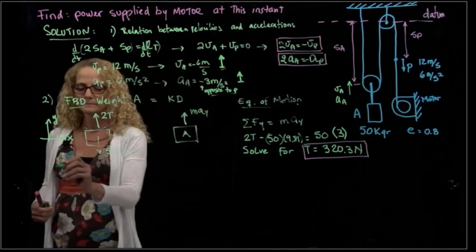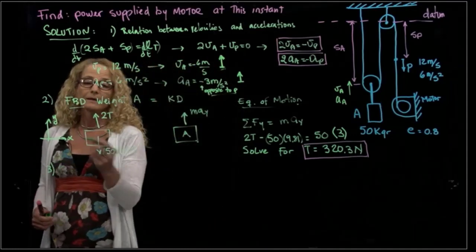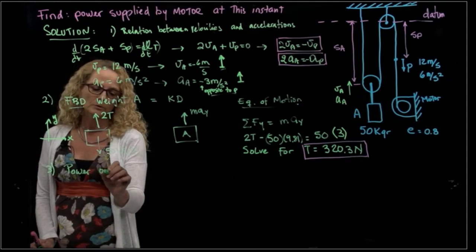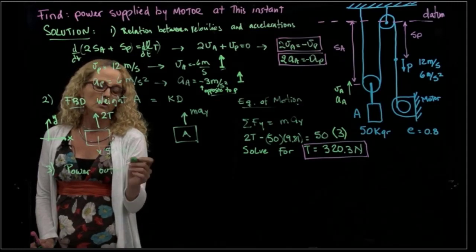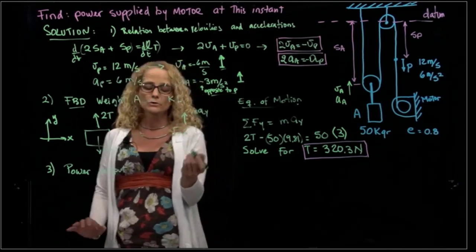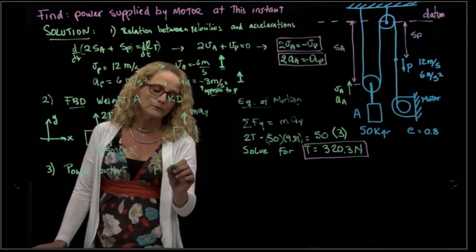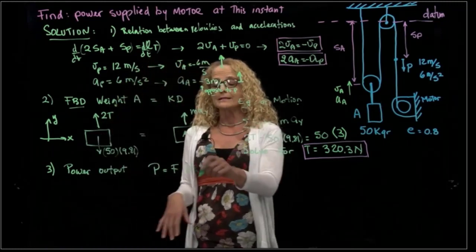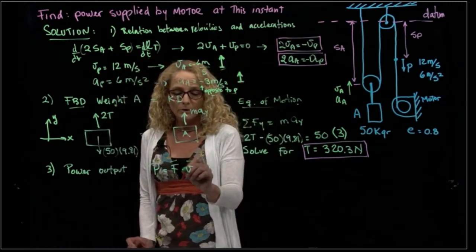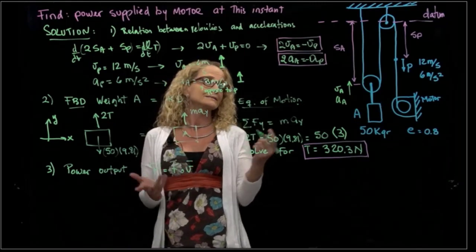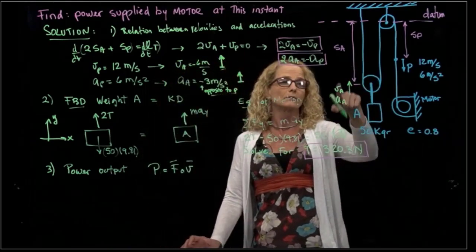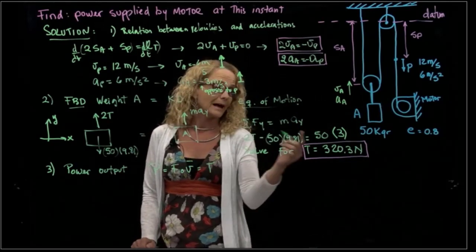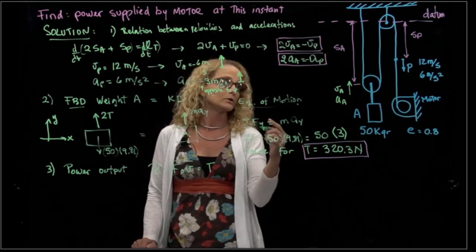The third step is to find the power output. So that will be, as you know, the definition of power: power is force times velocity. Usually this is a vector formula, but in this case, our tension and our velocity are in the same direction, so we can actually write only that tension and that velocity.